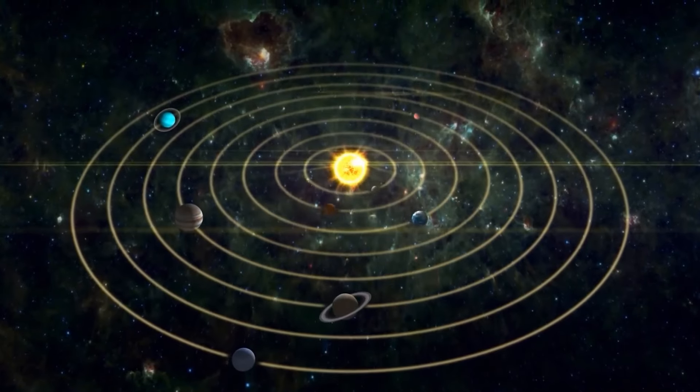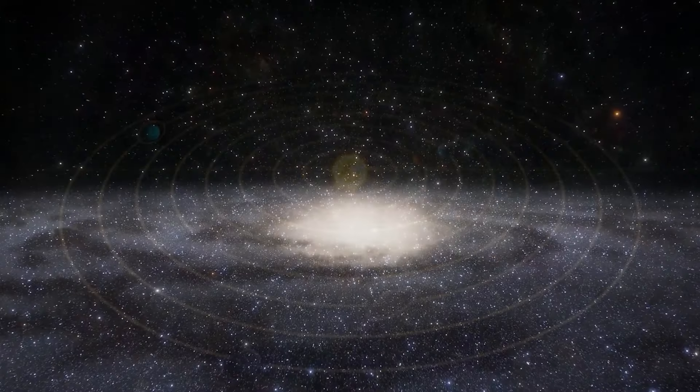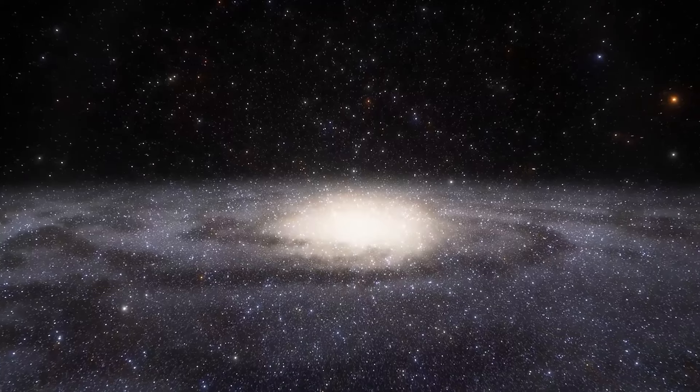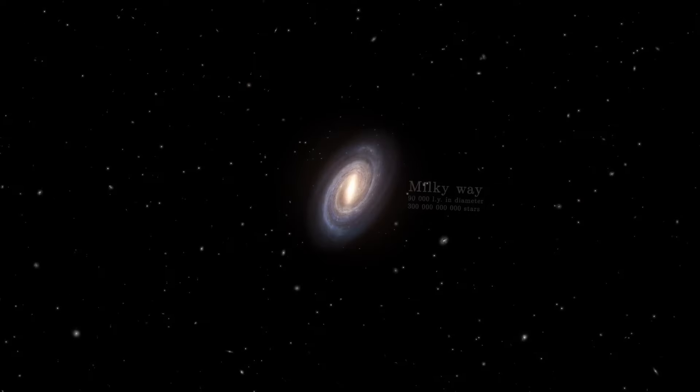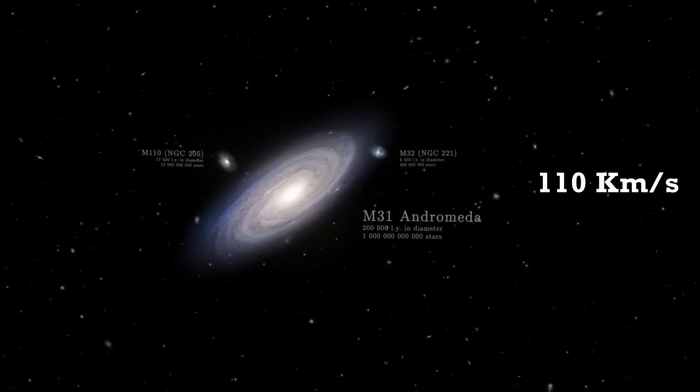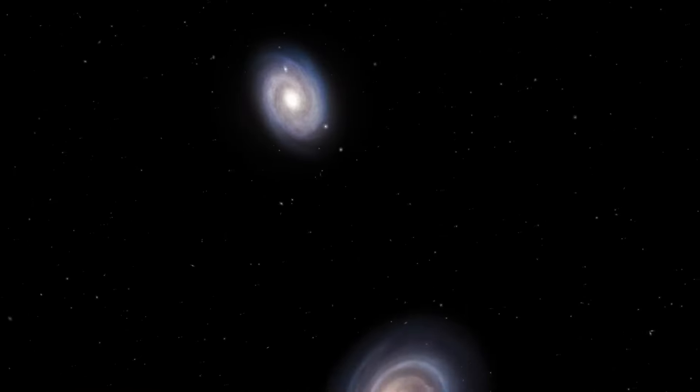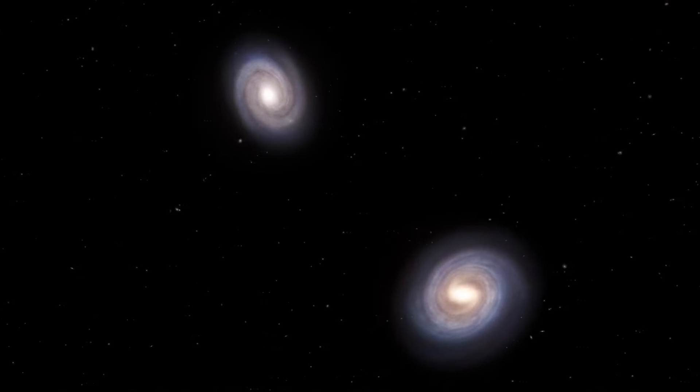While we have talked about the motion of the solar system, the galaxy as a whole is also moving through space like all other galaxies. The Milky Way and Andromeda galaxy, our closest large neighbor, are moving towards each other at a speed of about 110 kilometers per second, and they will collide with each other in about 5 billion years.